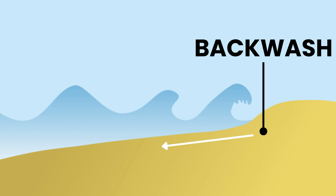Backwash is the water that flows back down the beach into the sea after the swash. It happens as the water from the swash loses energy and gravity pulls it back towards the ocean. Backwash helps to remove material from the beach, taking it back into the sea, which can lead to erosion if the backwash is stronger than the swash.